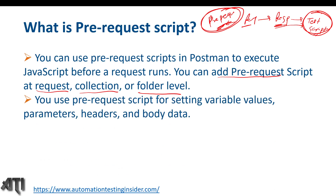You can use pre-request scripts for setting variable values. The question is: why do we use pre-request scripts? In manual testing, before we start actual testing, we have preconditions — whether the environment is ready, whether the site is up and running. Similarly, in API testing, we have pre-request scripts where we set variable values, parameters, headers and body data. We'll see some examples of how to set pre-request scripts.